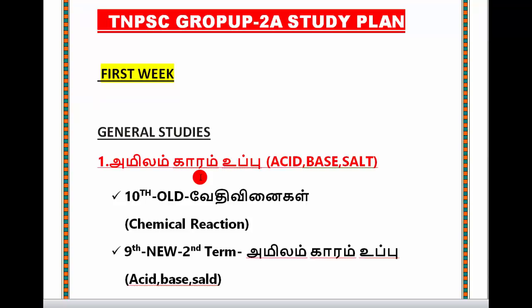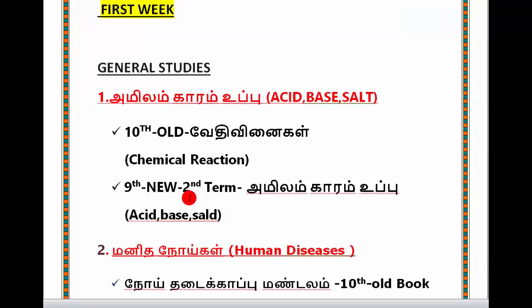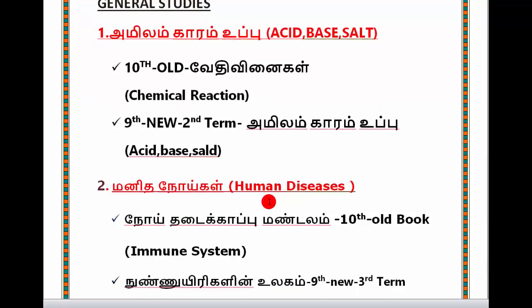The books covered are the 10th New Book, the 10th Old Book, and Chemical Reaction. The second topic is Amylum, Carum, Uppu. If you are learning Amylum, Carum, Uppu, you can cover the topic on chemistry. This topic is the most important topic. The first lesson is Amylum, Carum, Uppu — it is a very important lesson. The second lesson is also a main lesson in this topic.